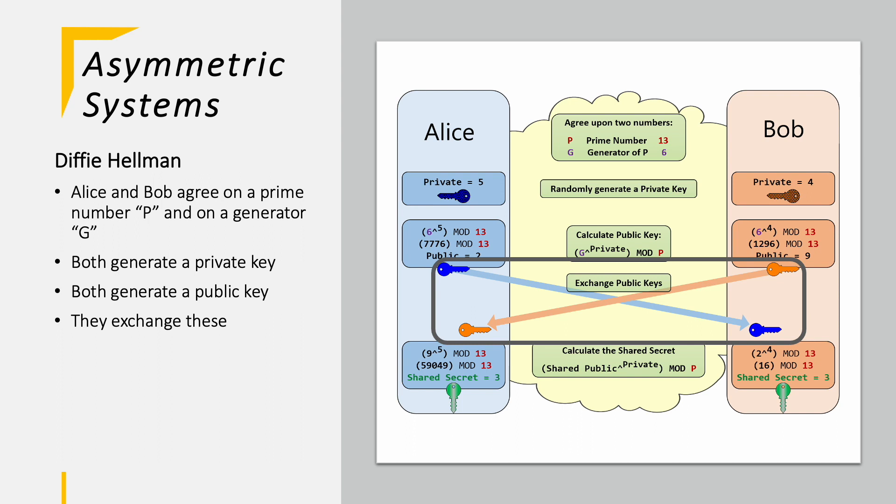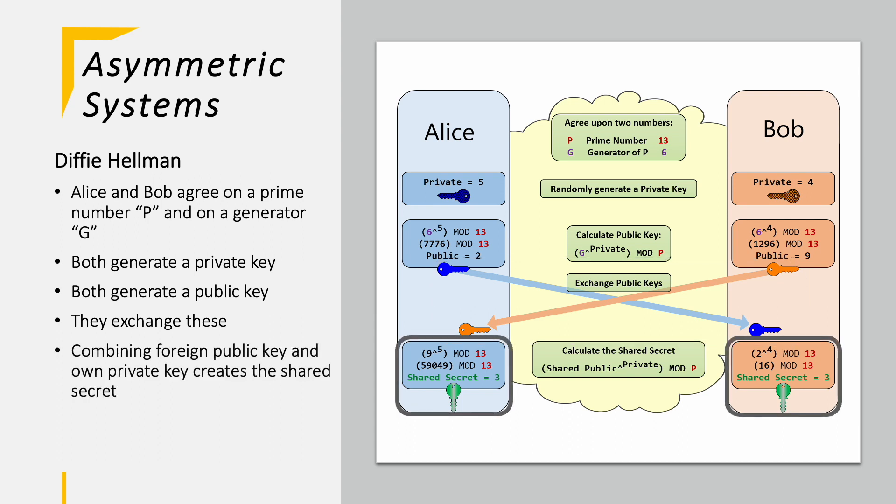Now they exchange those public keys and use them to calculate a shared secret. Here Alice takes the public key of Bob to the private key power again and then modulo it with the prime number. Bob is doing it too and should come to this exact same number as Alice. In this example, 3. The 3 will be then the secret to encrypt onward communication.